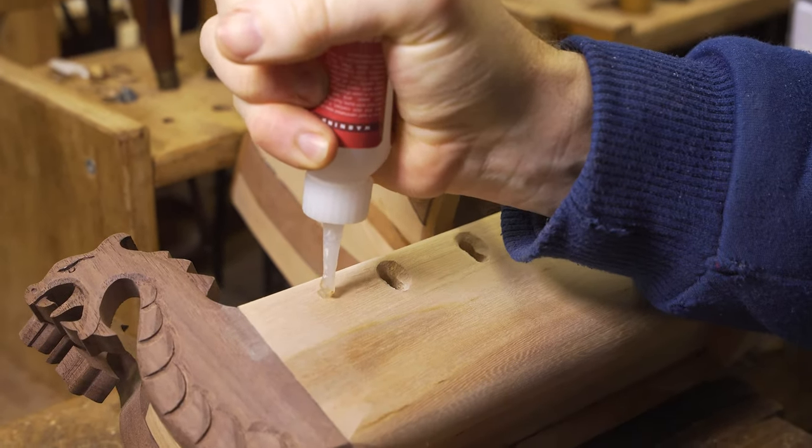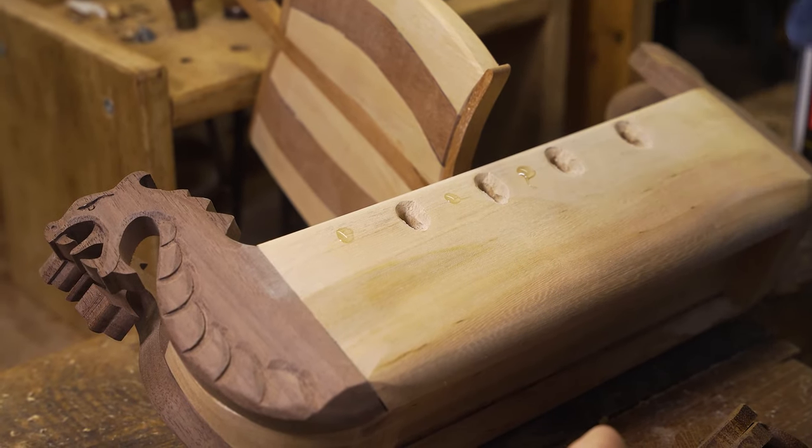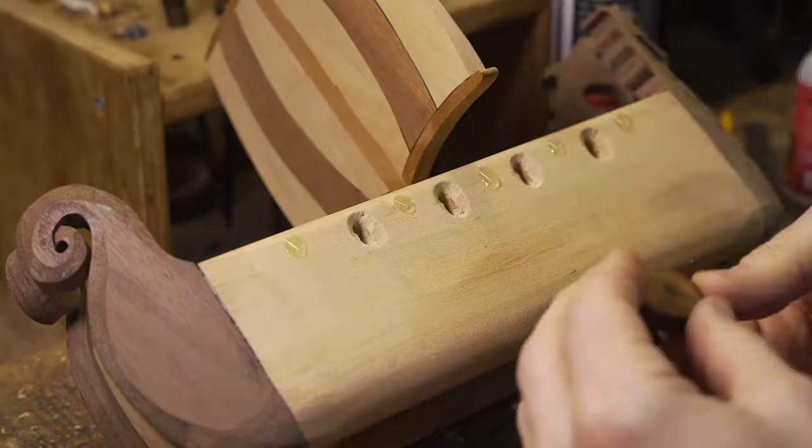To refine things further, we've got the shape of our longboat, we've got our mast, we then want to add those shields to either side to add detail and interest to the design.